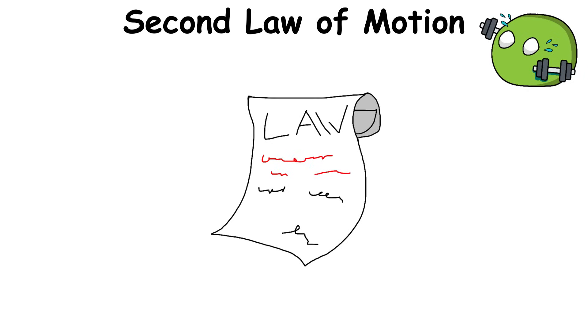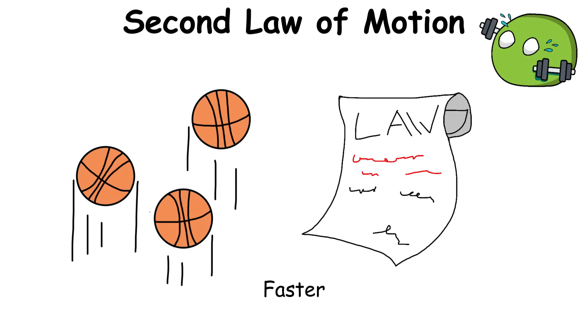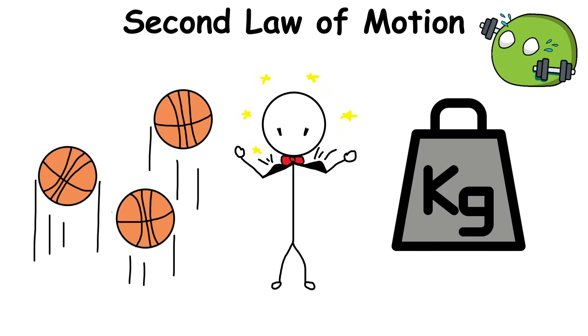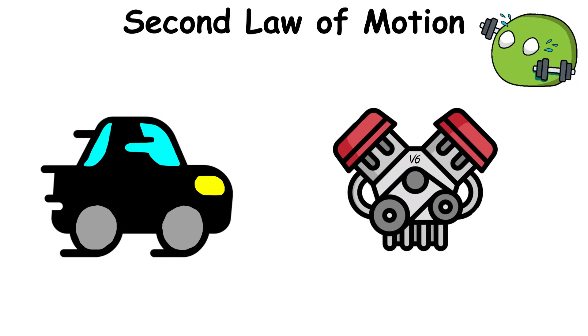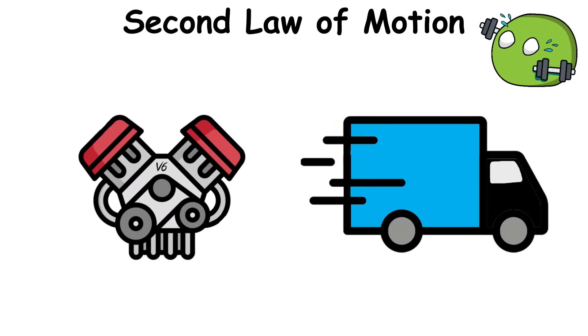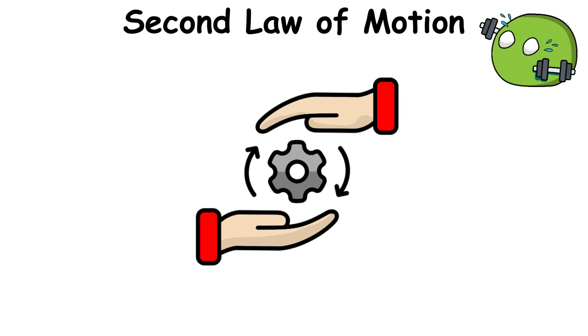But the same law also means that lighter objects can move faster than heavier objects when the same force is applied. So if you place a V6 engine inside a sedan, it will move faster than a pickup truck with the same engine as long as all of the other variables are unchanged.